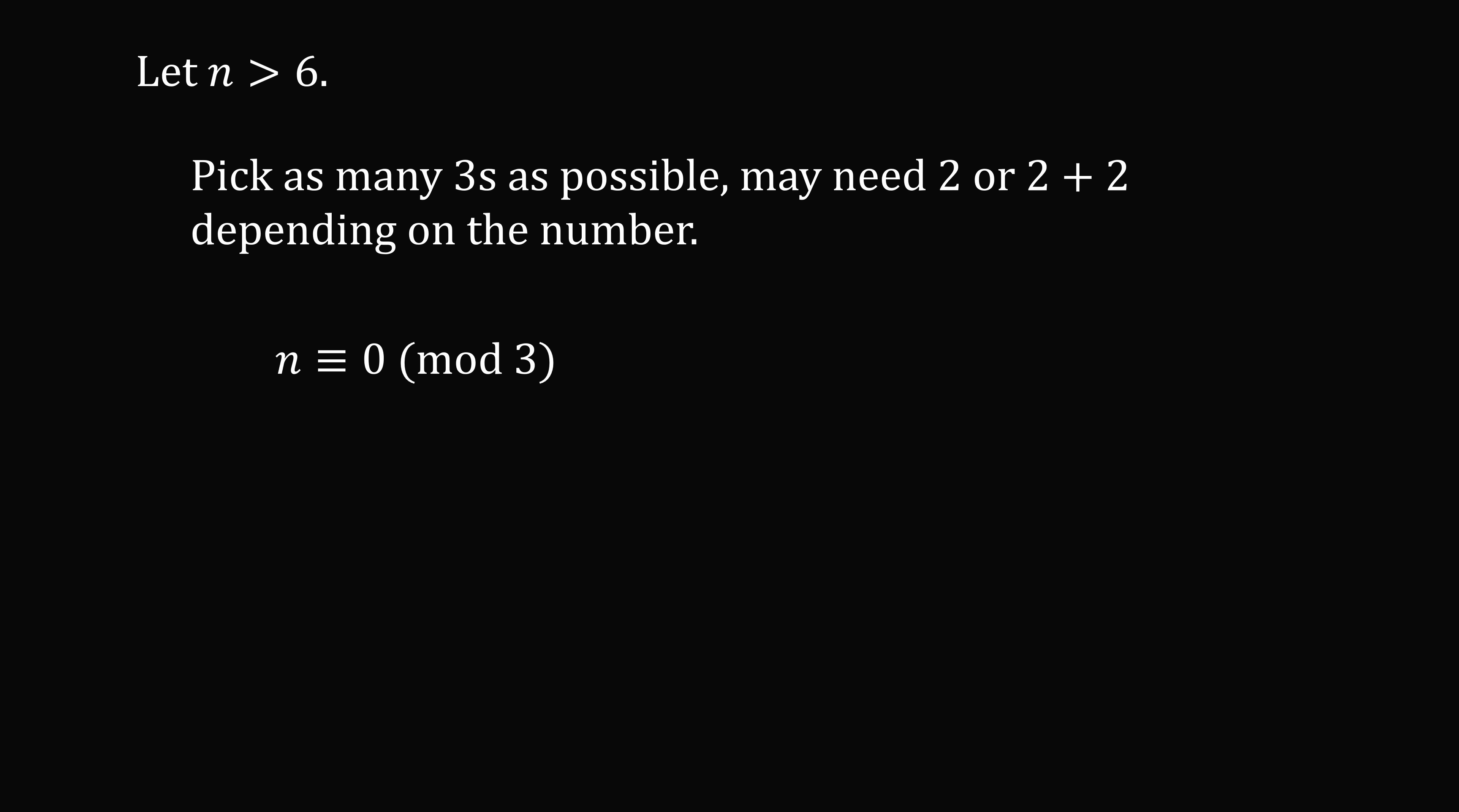So which option we pick depends on the remainder of the number by 3. If n is equivalent to 0 mod 3, then n is evenly divisible by 3, n equals 3 times k, so then we can pick all the 3s we want, and P equals 3 to the power of k. Another case is if n is equivalent to 1 mod 3, this means n equals 3k plus 1. In this case we're going to need 2 plus 2. So P equals 2 squared multiplied by 3 to the power of k minus 1. The final case is n is equivalent to 2 mod 3, then n equals 3k plus 2, so we just need 1 two. So we have P equals 2 multiplied by 3 to the power of k, and we've solved the general case.